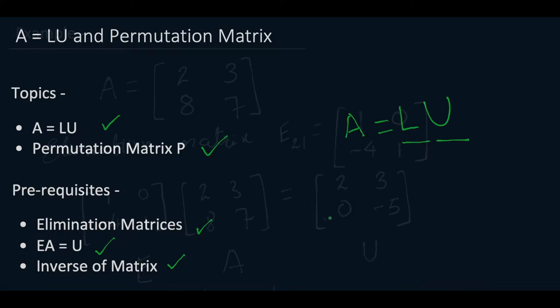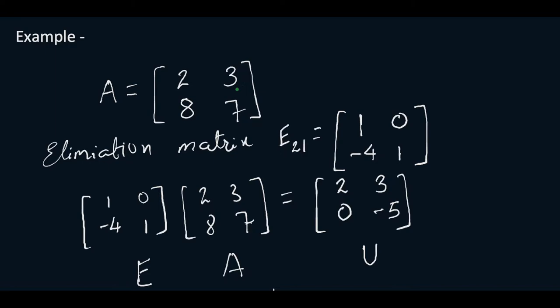Let us start with an example. Now here our matrix A is 2, 3, 8, 7. So what we need to do is get rid of this 8 to form it into an upper triangular matrix. So we will be using the elimination matrix E21. The operation is A2 equals A2 minus 4 times A1. So our elimination matrix will be 1, 0, minus 4, 1.